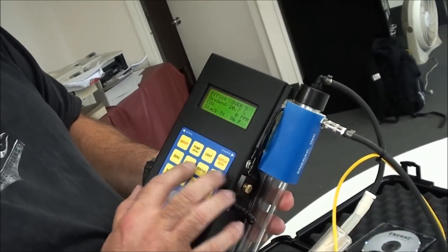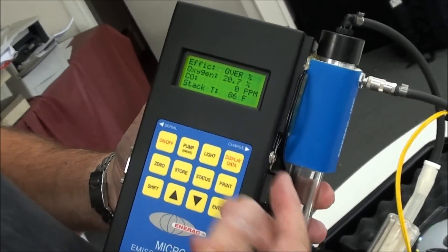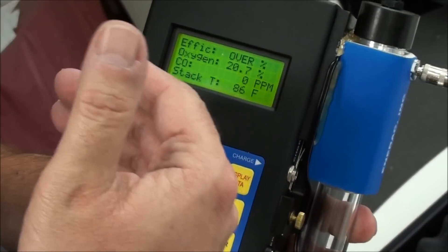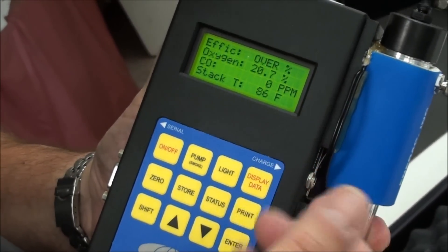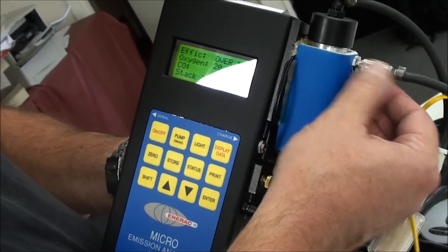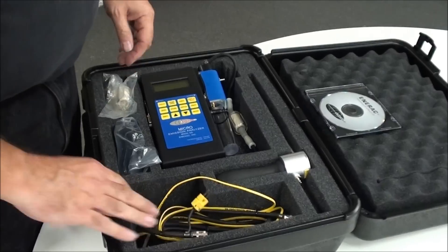Let the unit run. Let it purge. You can put it back on oxygen and CO, or any of the readings, and just watch it and wait for it to come back close to ambient again. At that point, you're done. You can turn the unit off, disconnect your hoses, and put everything away. And that's it. It's that simple.